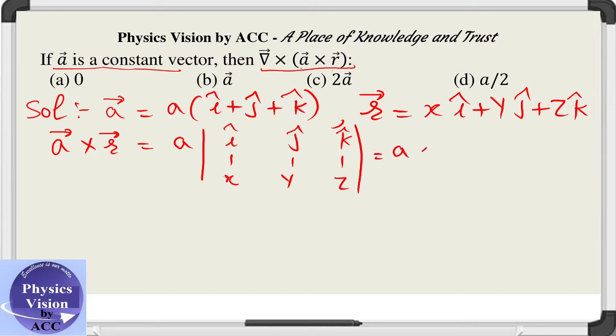When we solve this, we will get a times z minus y, plus j times x minus z, plus k times y minus x.